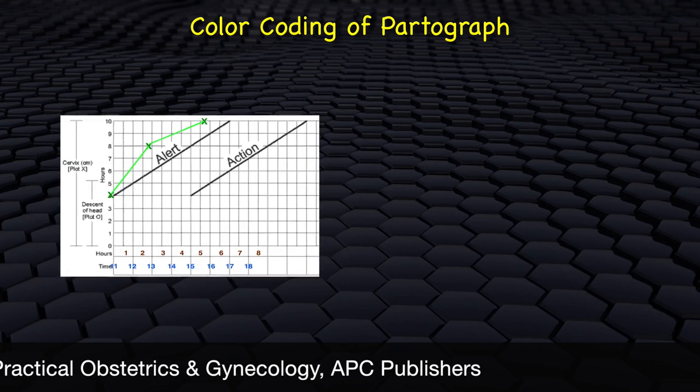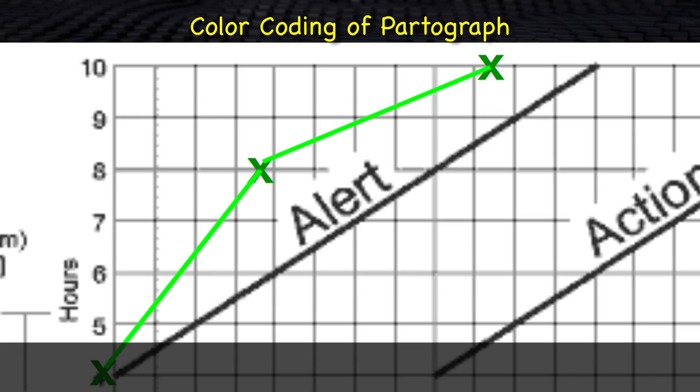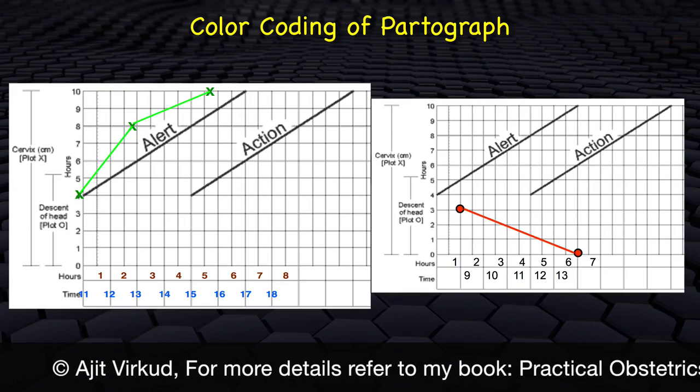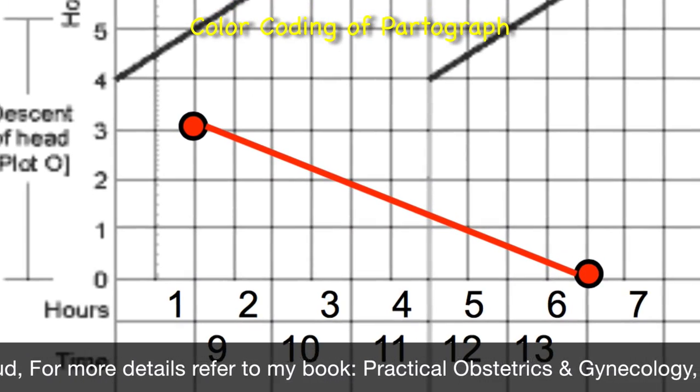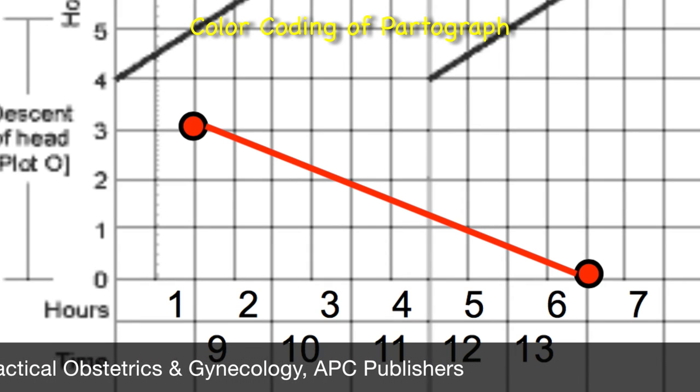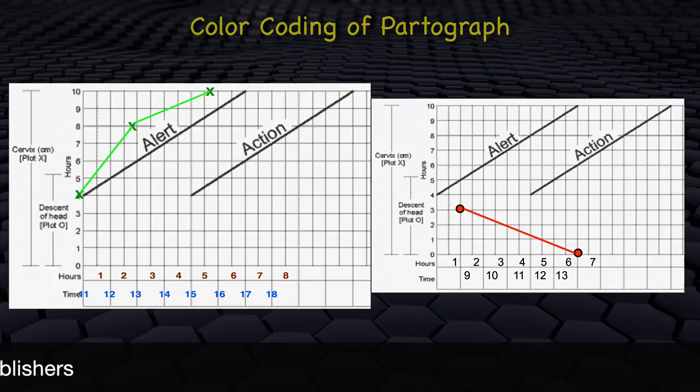To make the partograph visually appealing and easily decipherable, we use color coding for plotting the readings. Plot the X of dilatation using a green color pen. As more readings are taken, the X points are joined with a straight green color line. Plot the O of descent of head using a red color pen. As more readings are taken, the O points are joined with a red straight line. All other parameters are recorded using black pen.